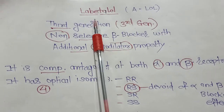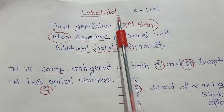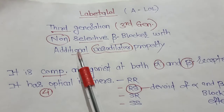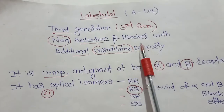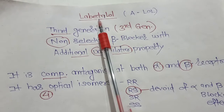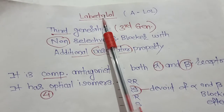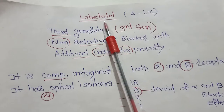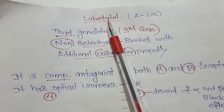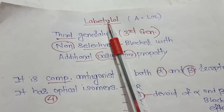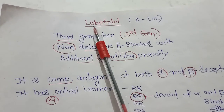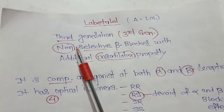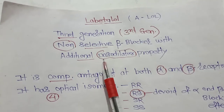Today we will discuss Labetalol. Labetalol is a third generation non-selective beta blocker with additional vasodilator property. Looking at the name L-A-B-E-T-A-L-O-L: the '-LOL' suffix indicates it's a beta blocker, and the 'A' is because it has additional alpha blocking property — making it 'A-LOL'. So it's a third generation non-selective beta blocker with additional vasodilator property.